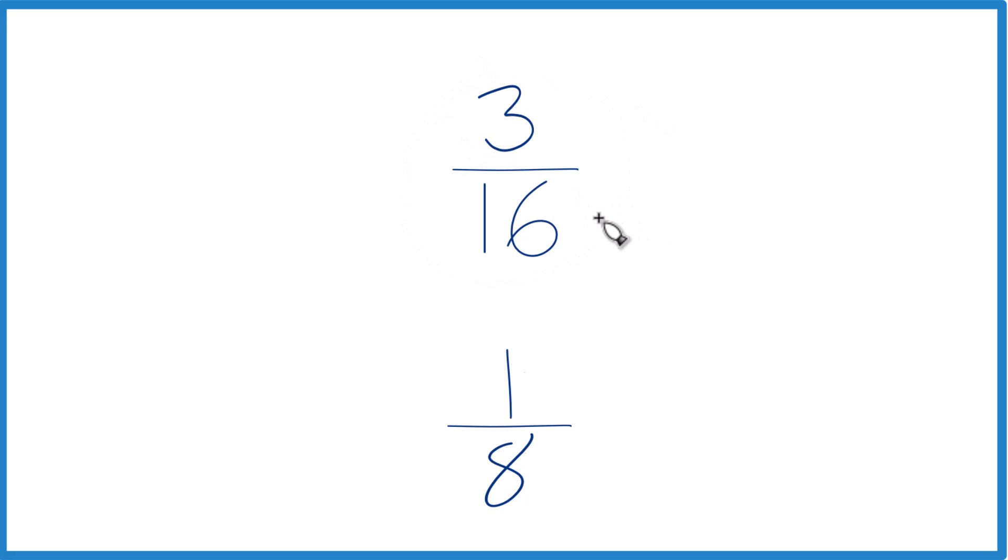Here's probably the way, though, your teacher wants you to do it. They want you to find a common denominator. So we want to find a number that both 16 and 8 go into evenly.